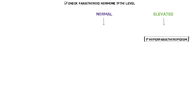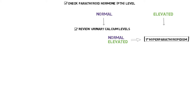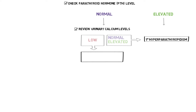If the PTH level is normal, look at the urinary calcium level. Normal or high levels of calcium in the urine also correspond to primary hyperparathyroidism.